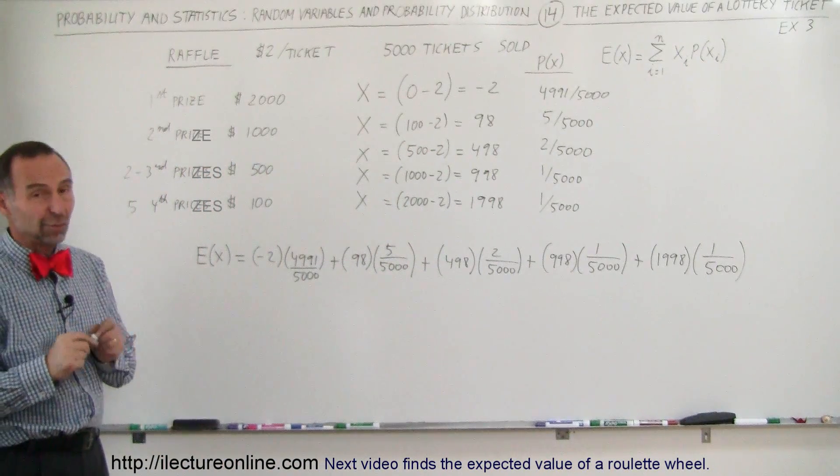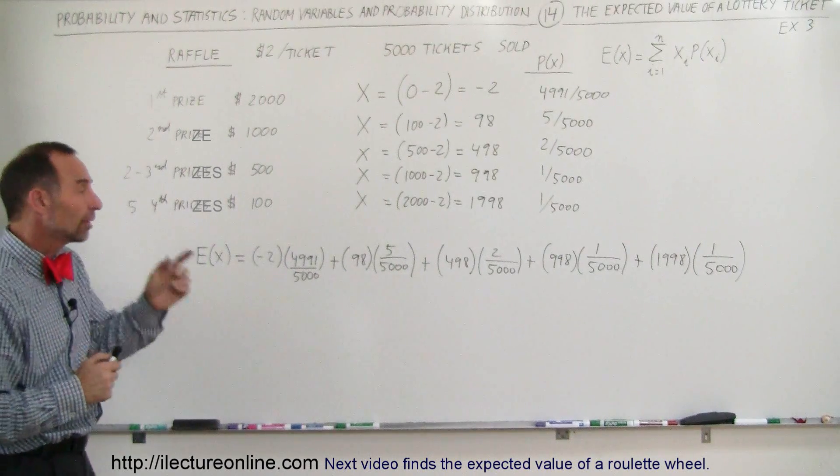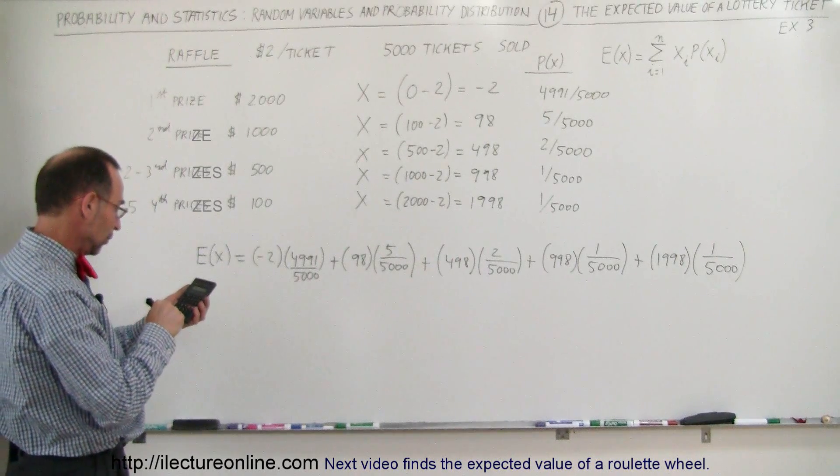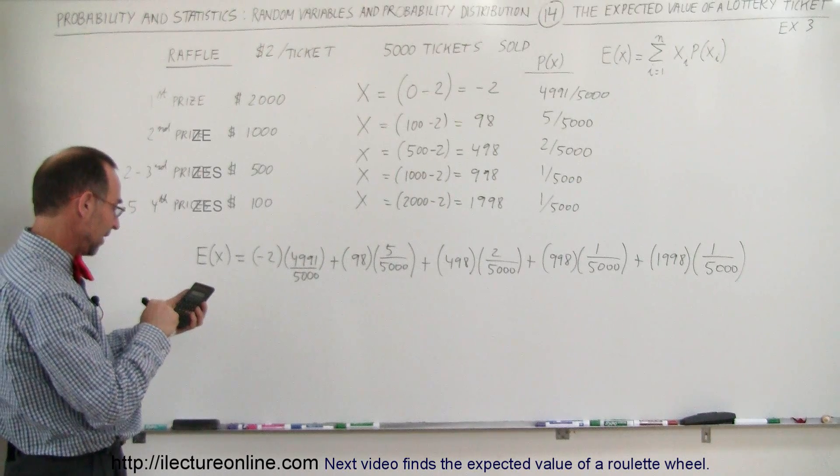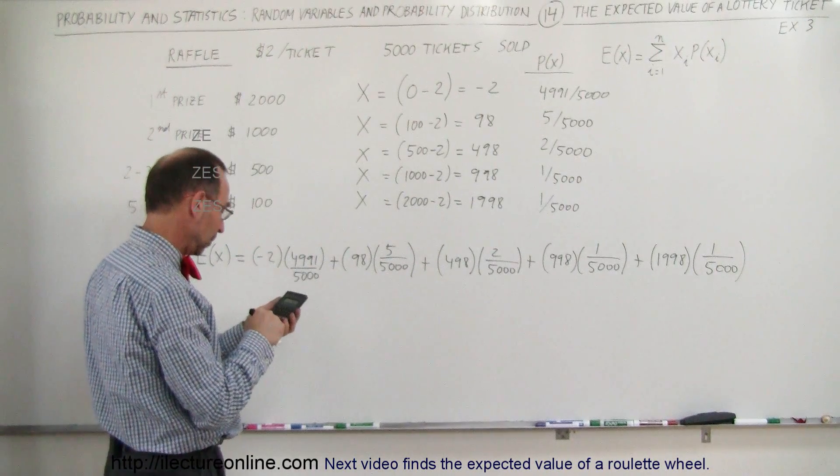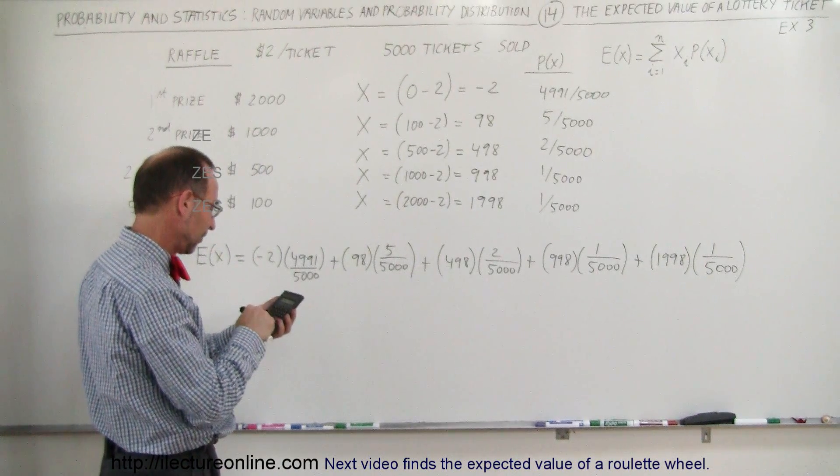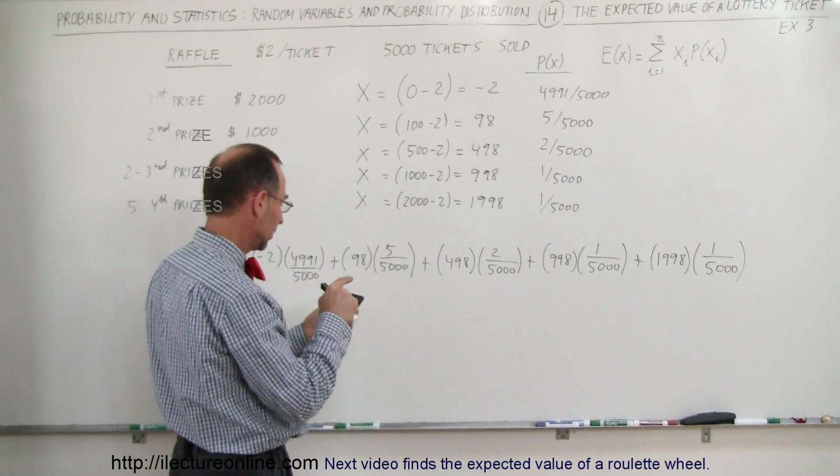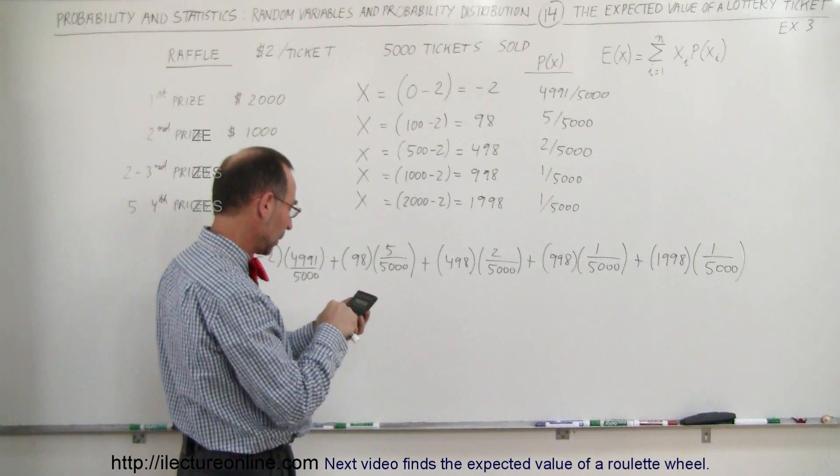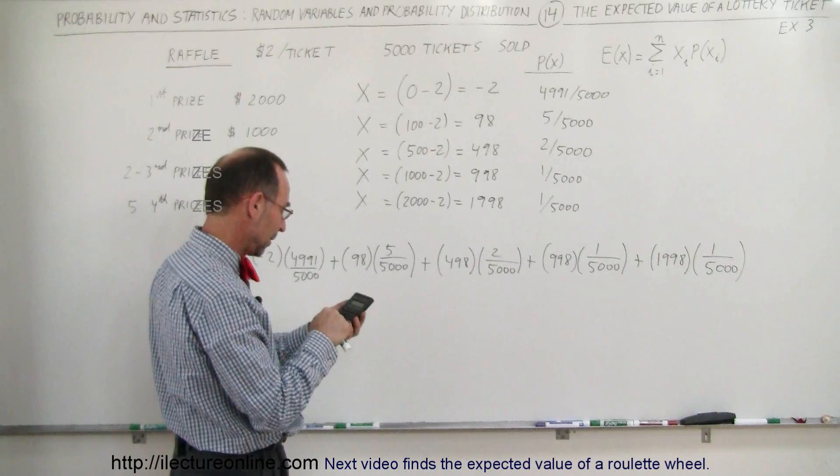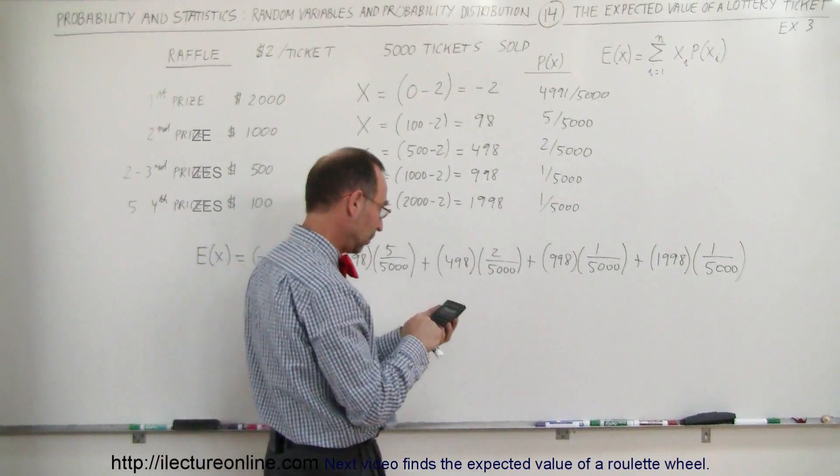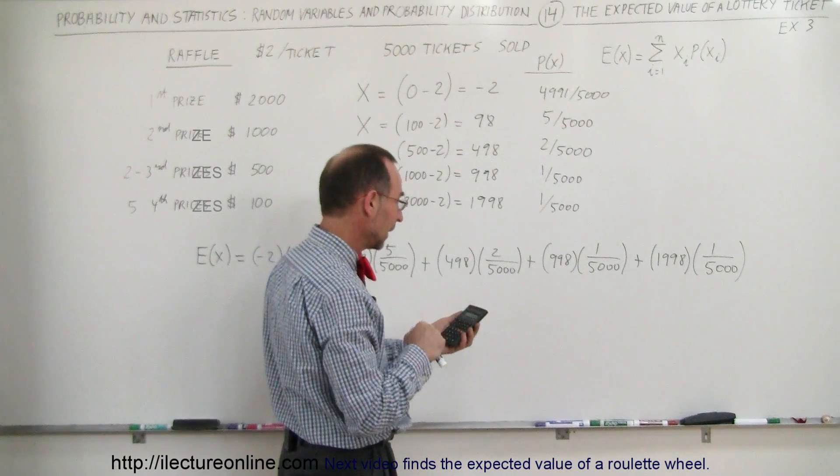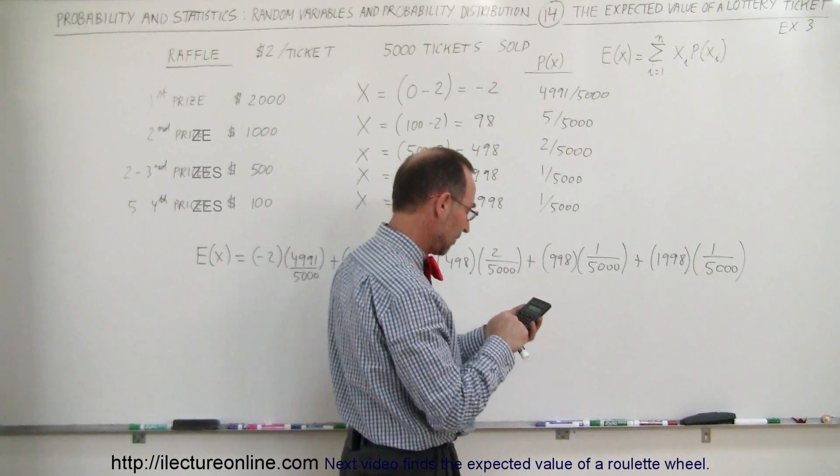That will give us the expected value of the ticket. And so actually what that is good for is it tells you whether or not that's a good deal or not such a good deal. And so let's go ahead and calculate it and see what we get. And of course, we're going to need a calculator for that. So we have negative 2 times 4,991 divided by 5,000, and we're going to add to that plus the quantity 98 times 5 divided by 5,000. We're going to add to that plus the quantity 498 times 2 divided by 5,000. We're going to add to that plus 998 divided by 5,000. And finally, we're going to add to that 1,998 divided by 5,000.